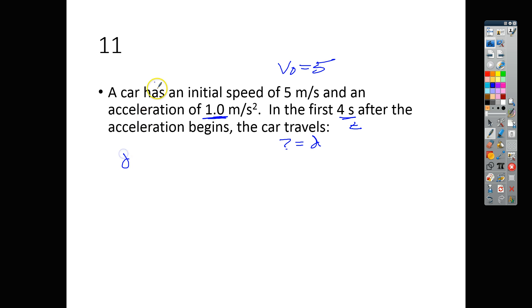So in order to do this one, we need to use the equation that does not have final speed in it. We're not worried about final speed, and we really don't need it. We weren't given it either. D is equal to V0T plus 1 half acceleration times time squared.